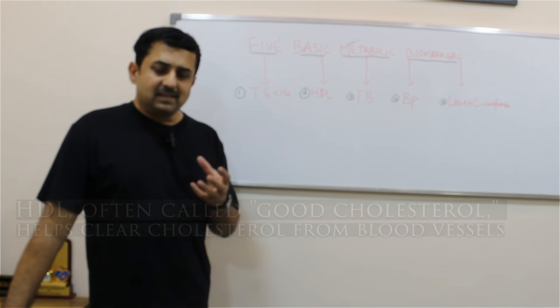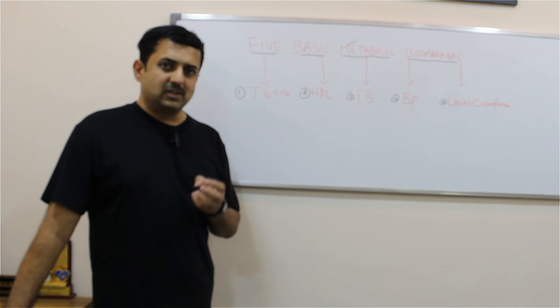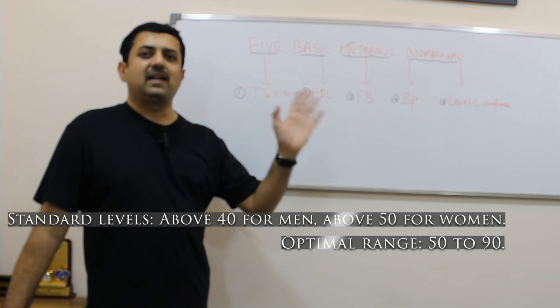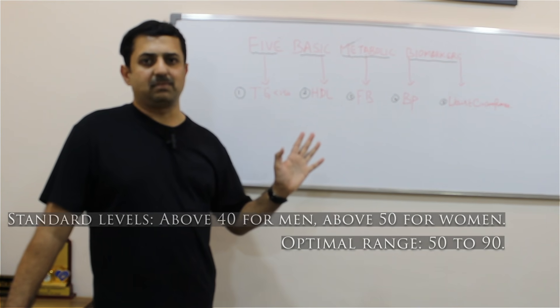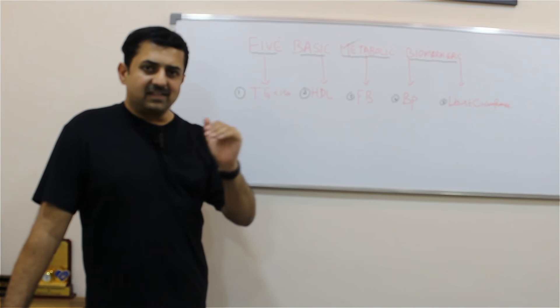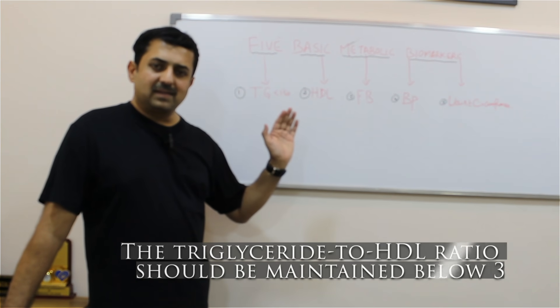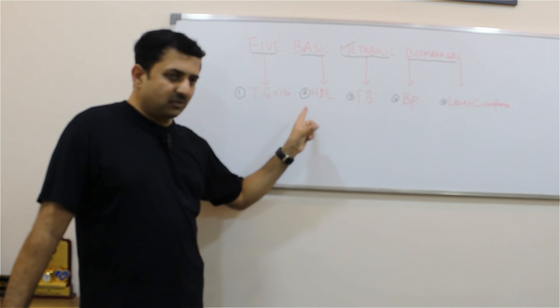This HDL good cholesterol should be kept above 50. If it is between 50 to 90, it is very much optimum. Then we see this triglyceride and HDL ratio, which should be kept less than 3.